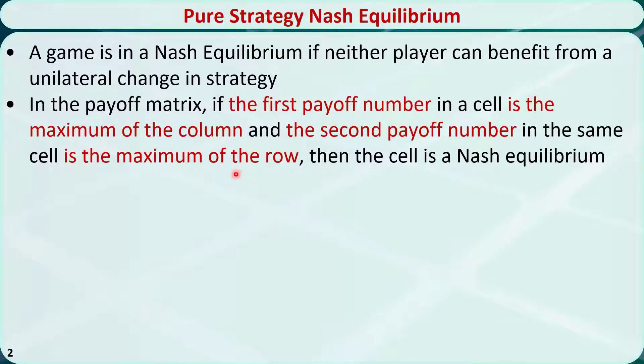The rule is as follows. In the payoff matrix, if the first payoff number in a cell is the maximum of the column and the second payoff number in the same cell is the maximum of the row, then the cell is a Nash equilibrium.